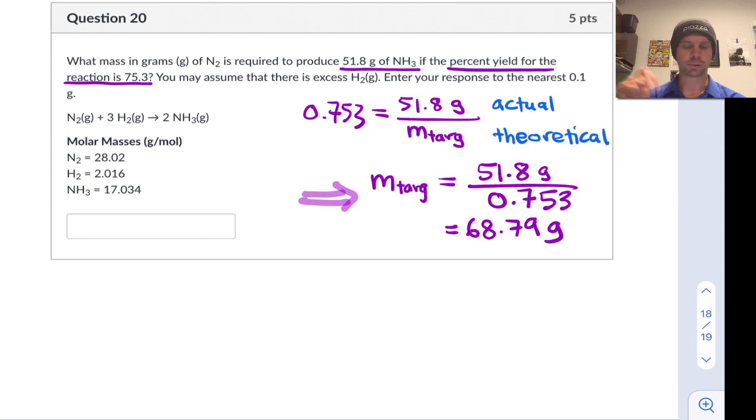And so now we can pause and say, all right, if we set up the reaction so that we're shooting for 68.79 grams and we end up with a percent yield of 75.3 percent, the actual mass we'll get out is our desired amount of 51.8 grams.